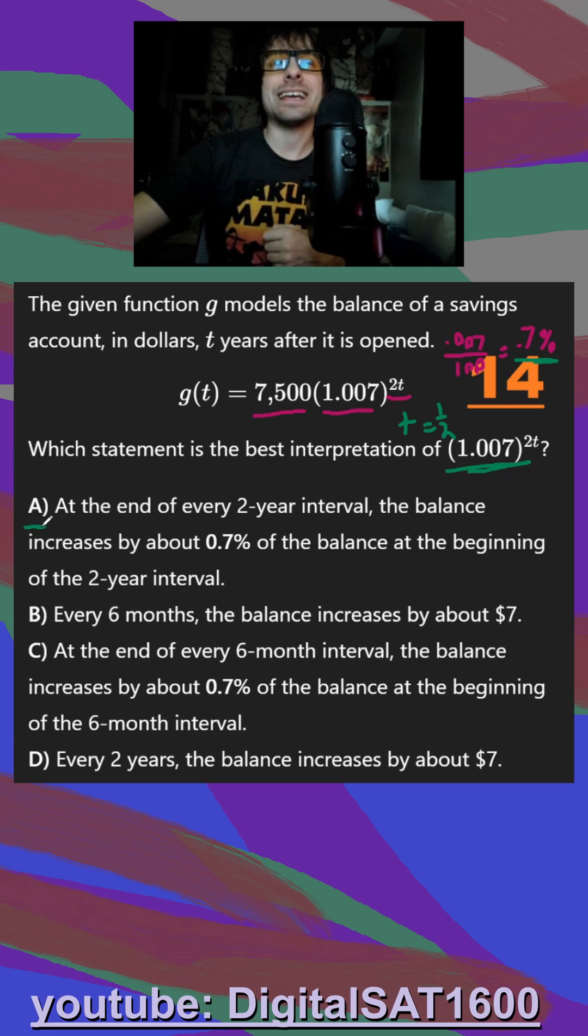Down below, in A, I see at the end of every two years. So this one is probably trying to trick us, it would only be every two years if it was one half t. Because then when I plug two in for t, I get a one overall.